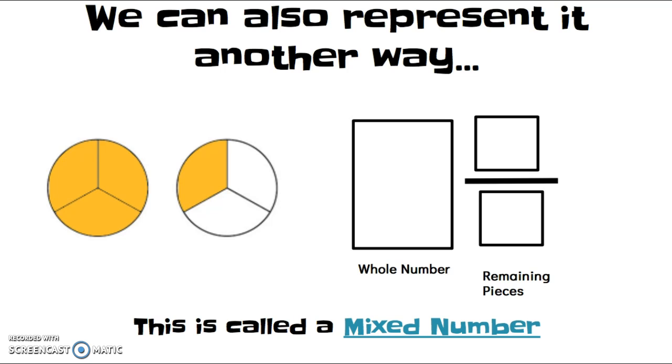But this can also be represented as a mixed number. So, what that means is we're going to show the full pie as a whole number and then just write the remaining pieces as a fraction. So, when we look at this, we see that there is 1 full pie. So, in our whole number box, we're just going to write a 1 because we have 1 whole number, 1 whole pie.